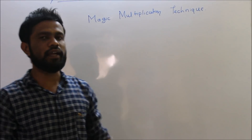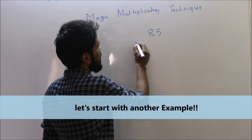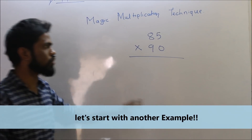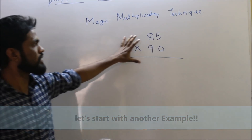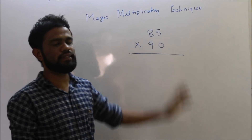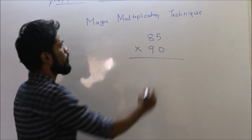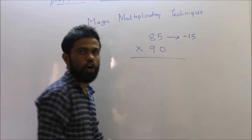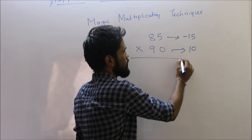Here is another example: eighty-five multiplied by ninety. We solve this like the previous example. In the first step, we compare each number with one hundred — both are less than one hundred. So we subtract from one hundred: eighty-five is fifteen less than one hundred, and ninety is ten less than one hundred.